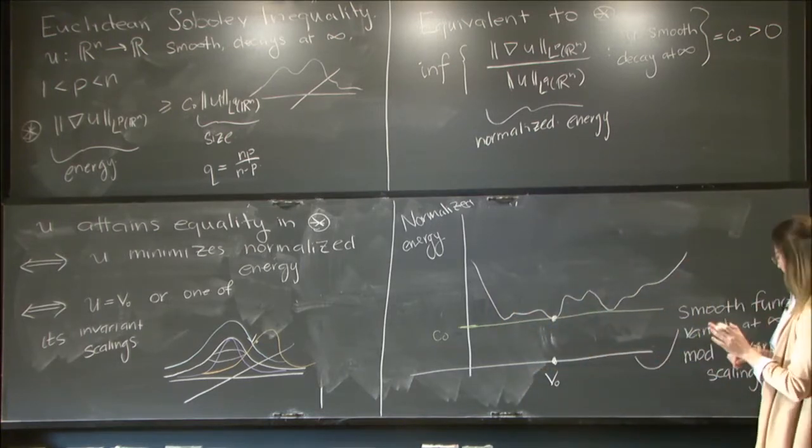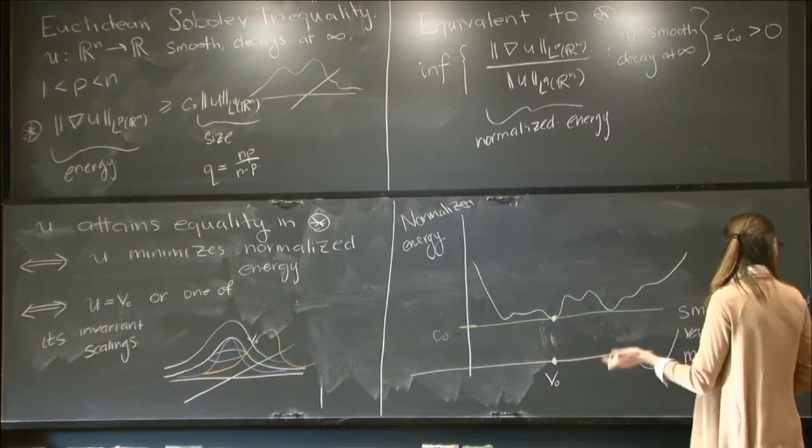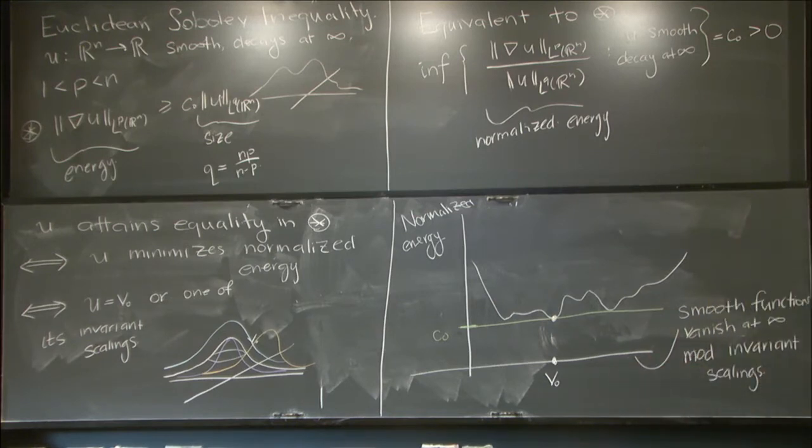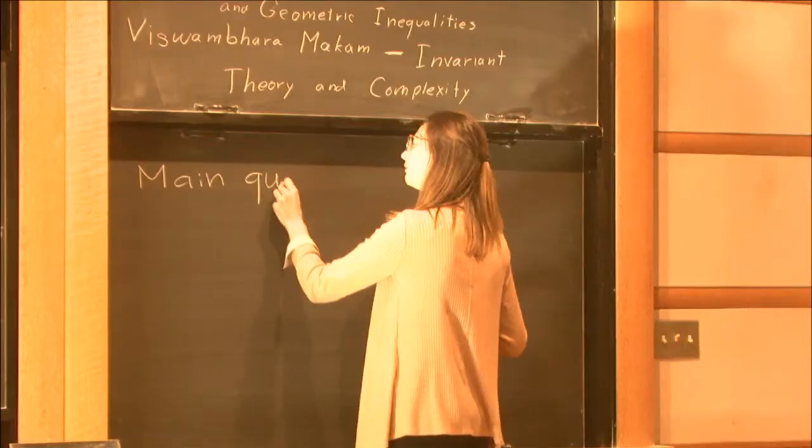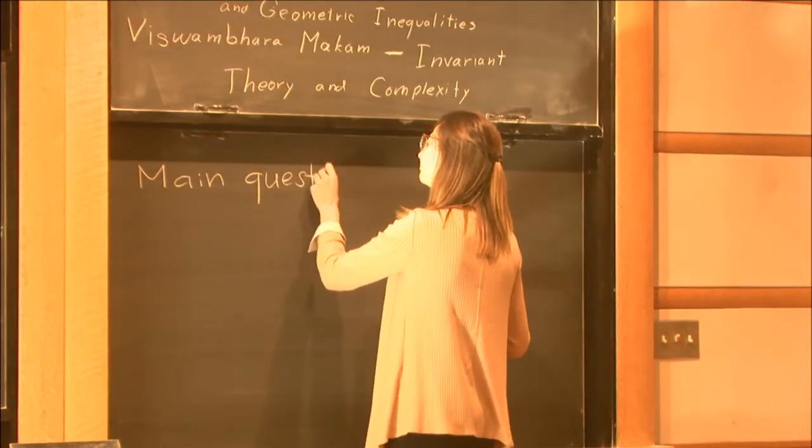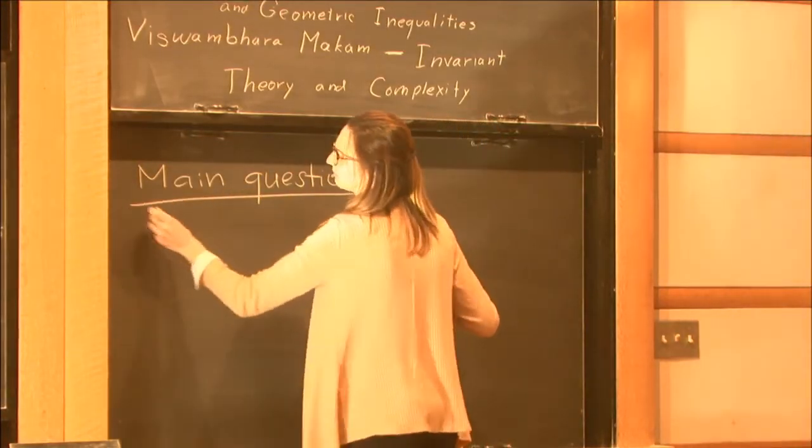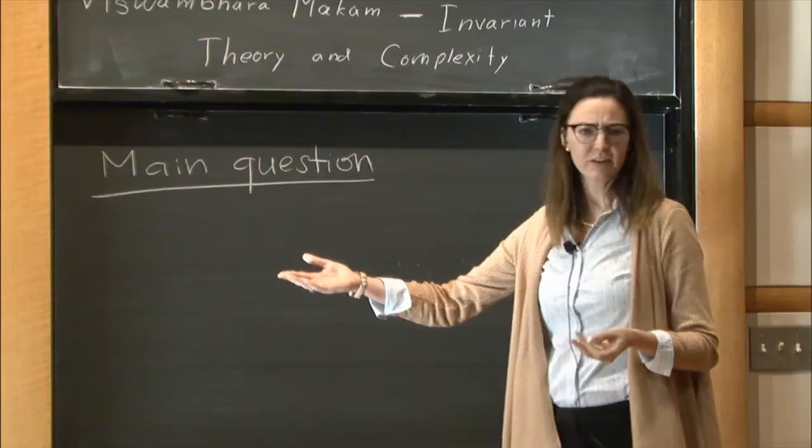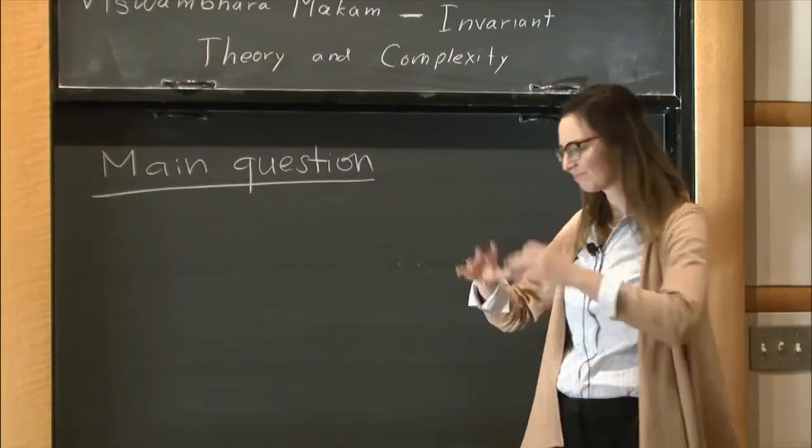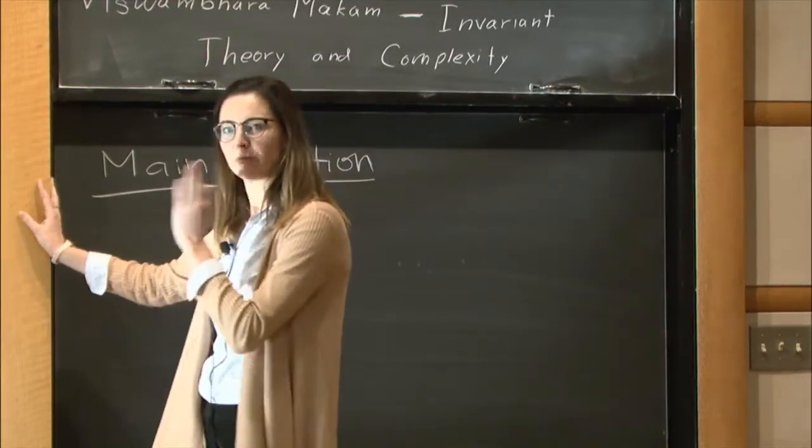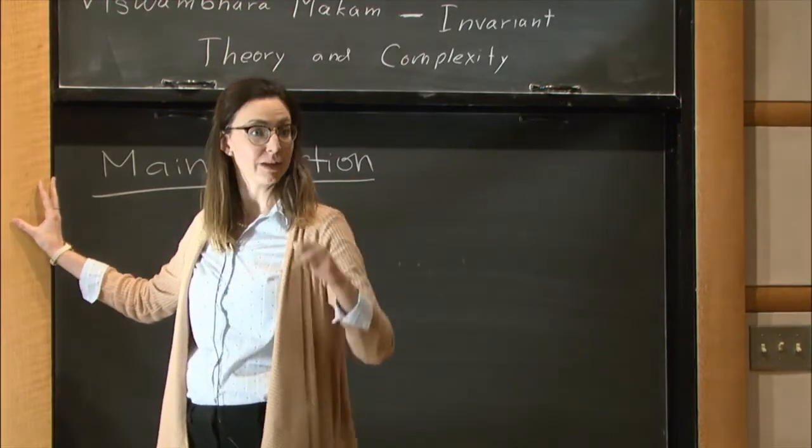So the principal type of question that I'm interested in is the following. So this is that of quantitative stability. And here I'll phrase it in terms of the Sobolev inequality, but the sort of standard setup that we have to get ourselves into is to have some inequality.